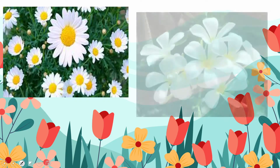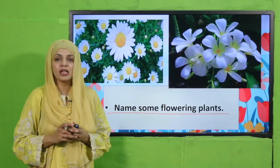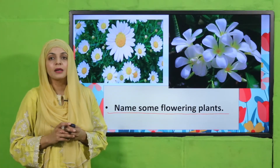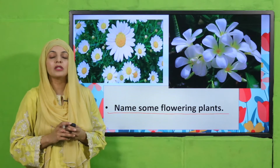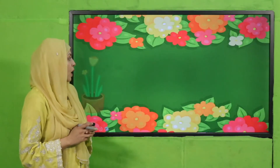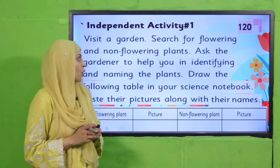Pre-reading question: quickly tell me the names of some flowering plants. As we covered in the previous lecture — roses, jasmine, lilies, marigold. These are all flowering plants.